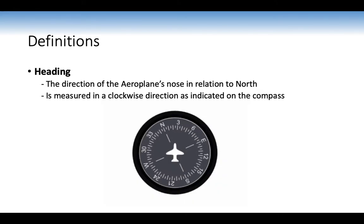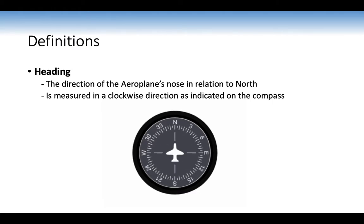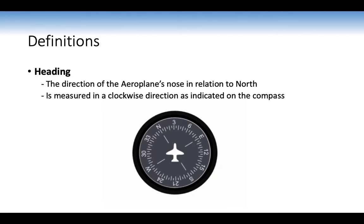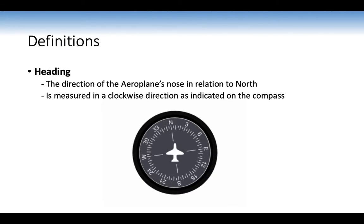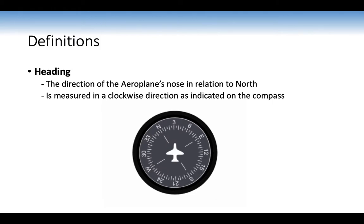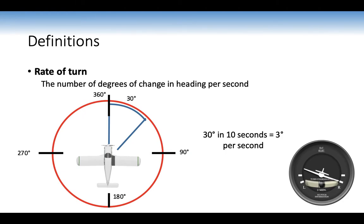Heading is the direction of the aeroplane's nose in relation to north, measurable from 0 to 359 degrees, measured clockwise as indicated on the compass. In the training area, unless otherwise advised, we will fly all turns through 360 degrees. Rate of turn is the number of degrees of change in heading per second — the word 'rate' relates to a unit of time.